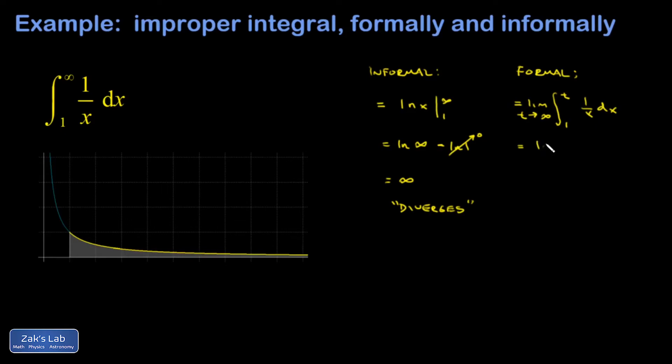And I guess the antiderivative, which is the natural log function. And so I end up with the limit as t goes to infinity. Natural log of t minus natural log of 1. Natural log of 1 is just 0.